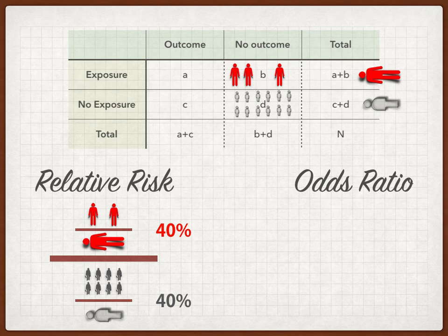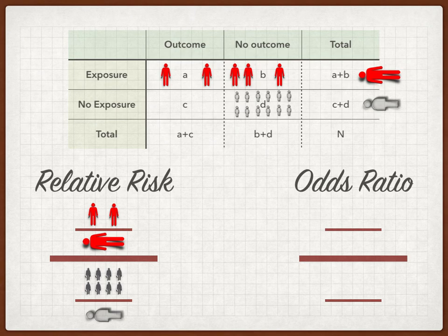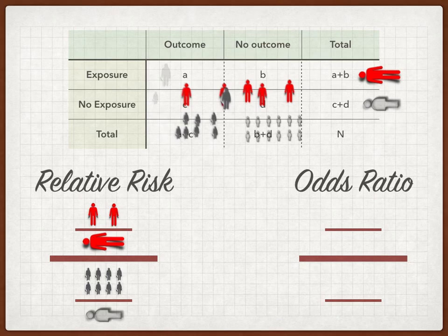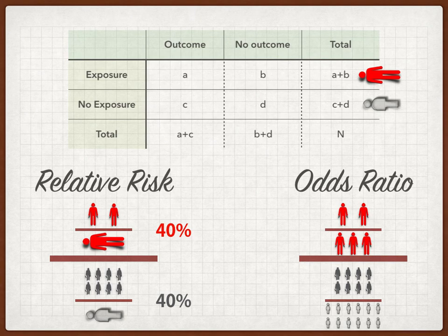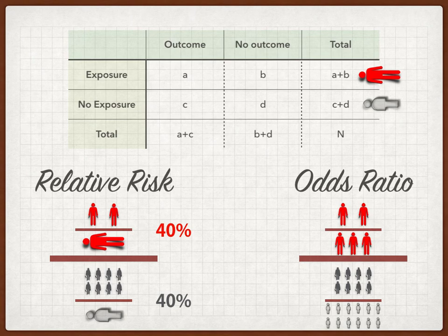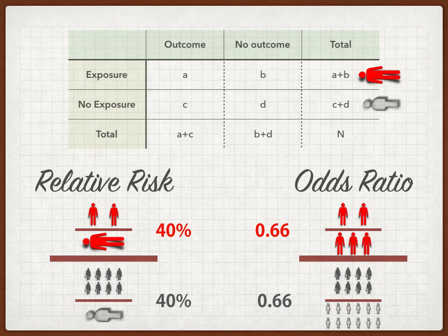Odds ratio, on the other hand, looks at the number of people who had the exposure and developed the outcome relative to those who have the exposure and don't have the outcome. In this case, 2 to 3 — just like Las Vegas casino odds. We then take this as a fraction of those without the exposure who develop the outcome — 8 — relative to those without exposure and without the outcome — 12. So two-thirds relative to eight-twelfths, which again is one.